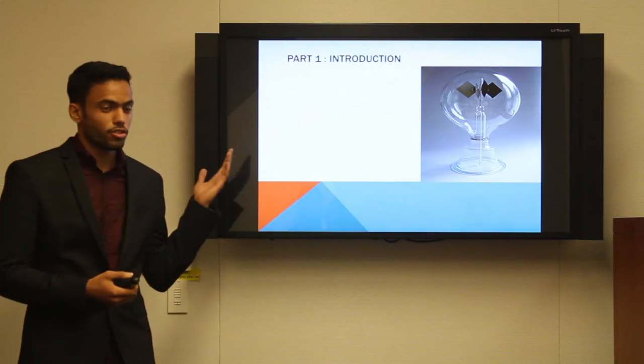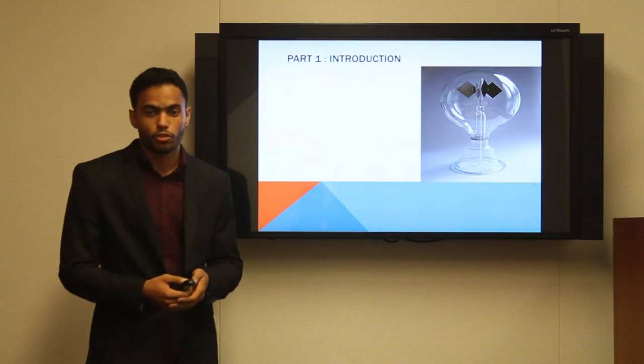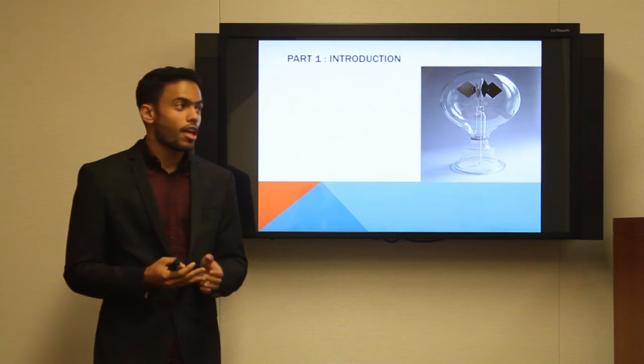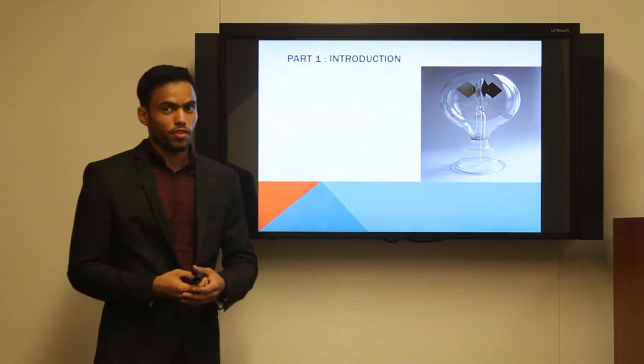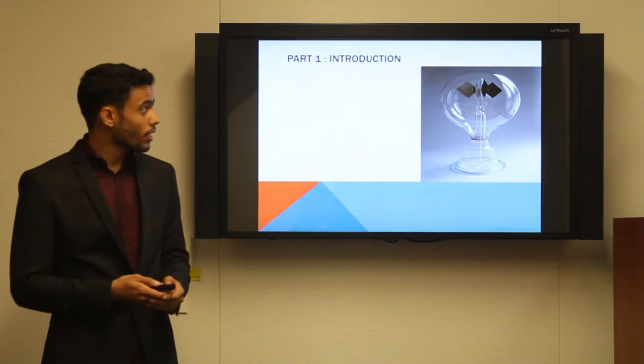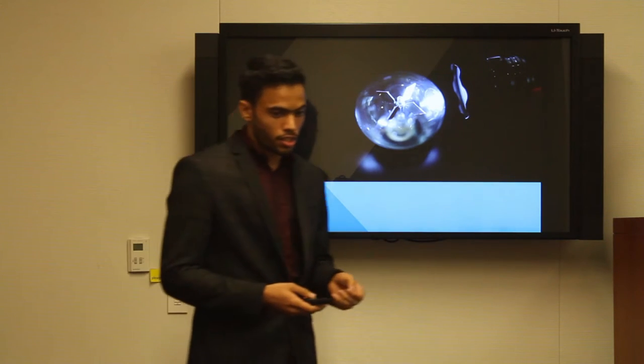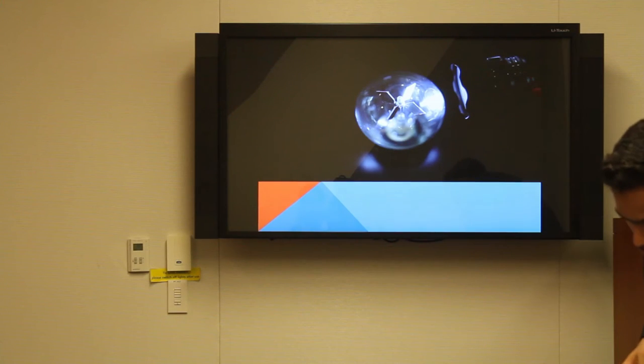This device is called the Crookes Radiometer. It consists of four vanes, each vane has a black and a white side, and the gas inside is of a very low density. And this is how it works. If you were to shine light, the vanes are going to rotate.